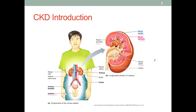The renal pelvis collects the urine your kidney is making, and then eventually it travels down through the ureter into the bladder, and then down through the urethra to be excreted.